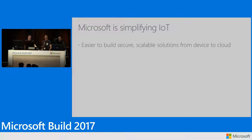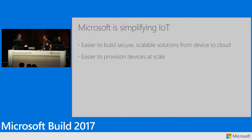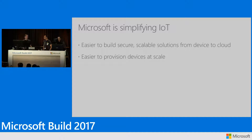We're doing a set of things to simplify IoT. Number one is making it easier to build secure, scalable solutions from device to cloud, so you don't start with something that leads you down a dead end. Number two is making it easier to provision devices at scale. Even after a customer gets an IoT solution set up and running, you can hit bottlenecks when you start trying to scale the deployment of those devices.